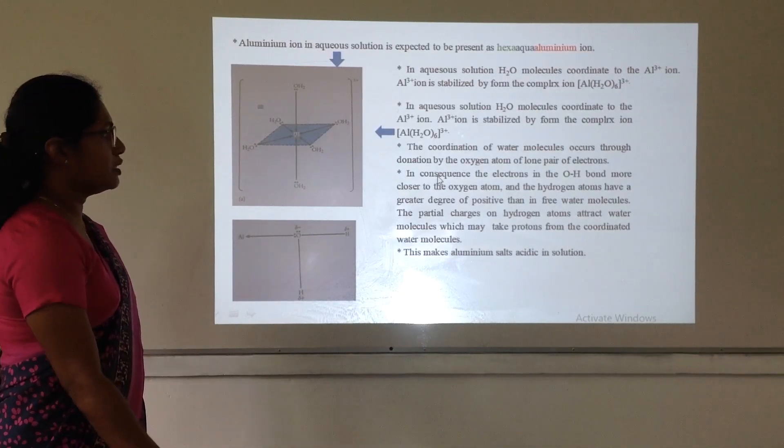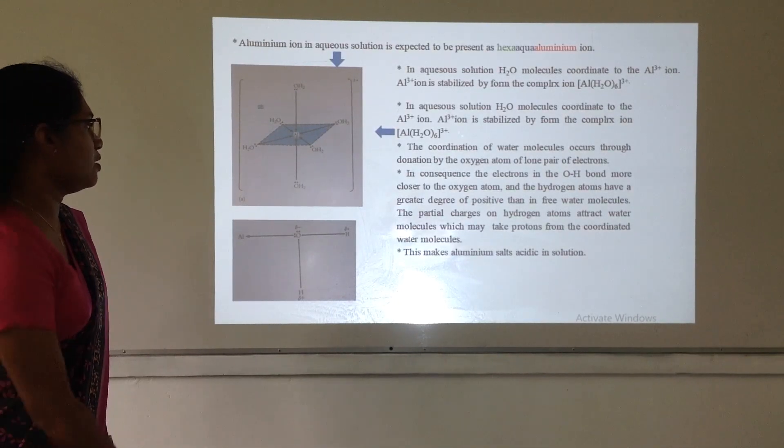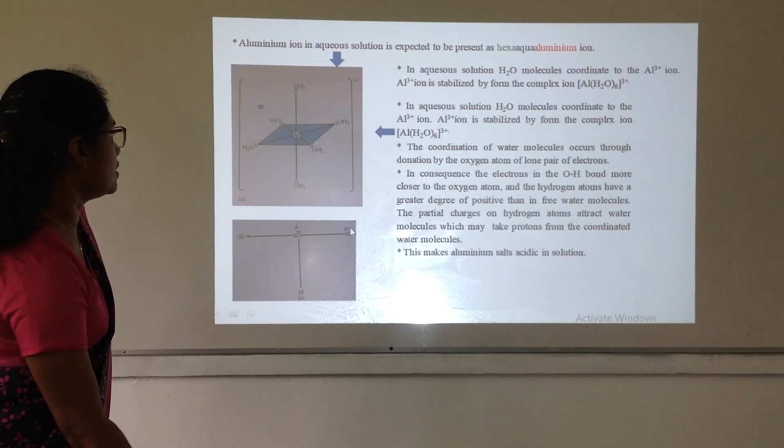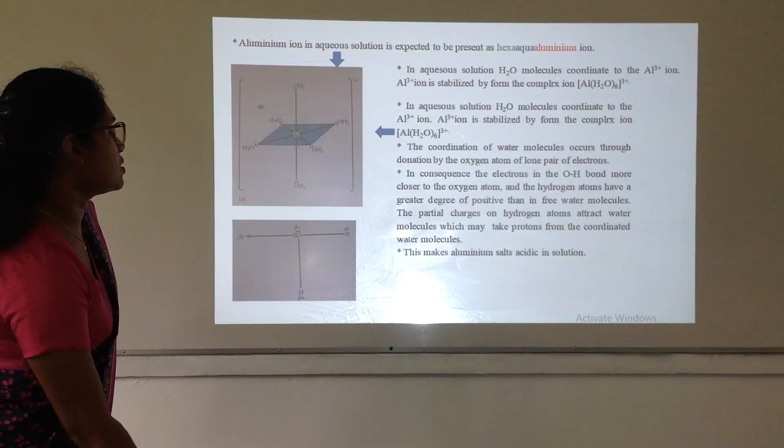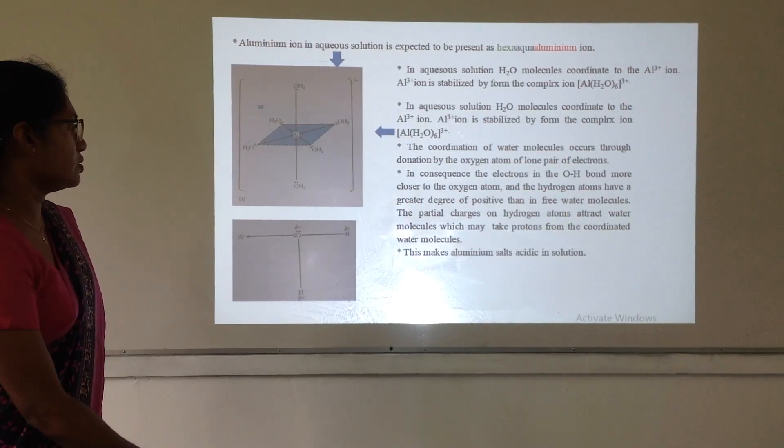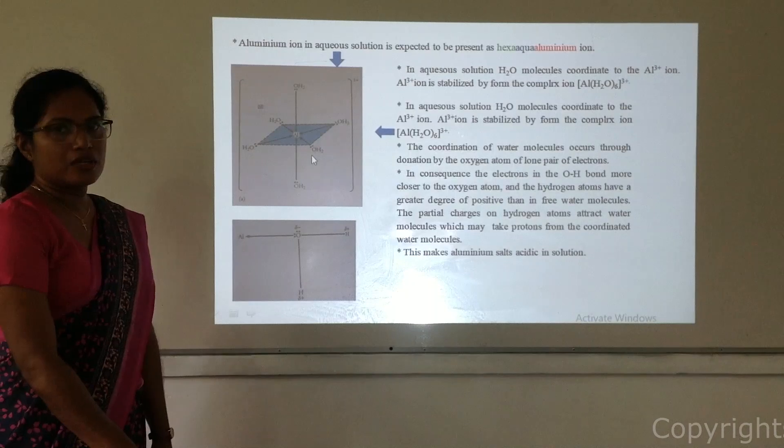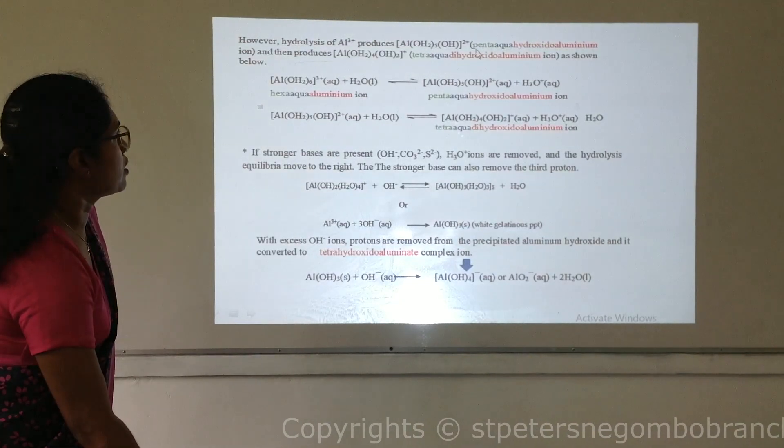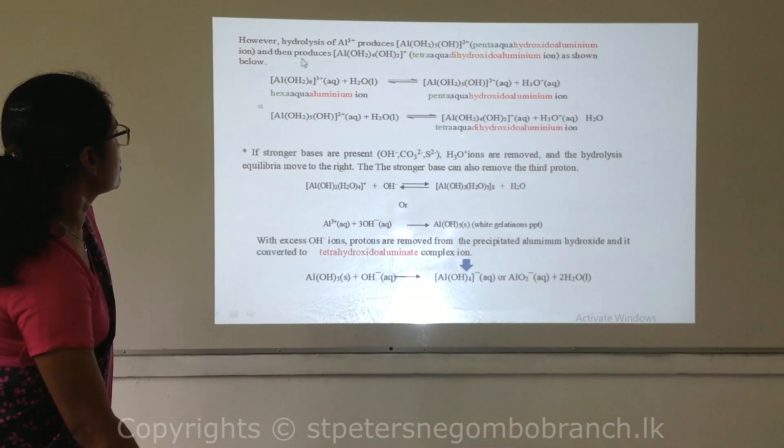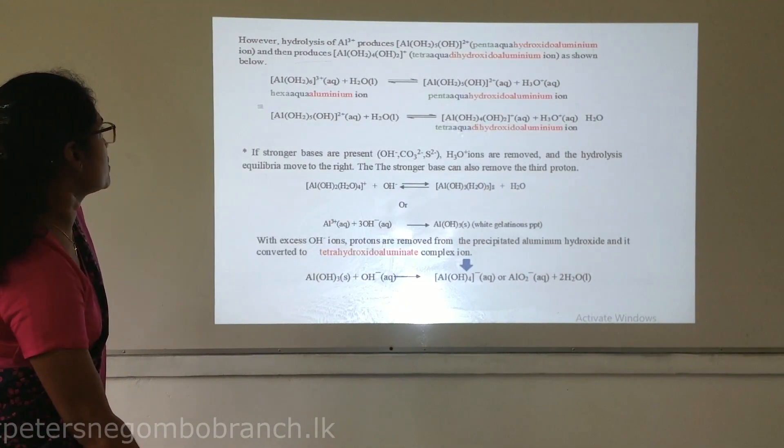In consequence, the electrons in OH bond move closer to oxygen atom. And the hydrogen atoms have greater degree of positive charge than the free water molecules in the solution. So, that free water molecules in the solution tend to take the protons from this complex ion. And this makes the aluminium salt acidic in the solution. So, this aluminium complex ion starts to hydrolyze. Hydrolysis means removing water molecules.